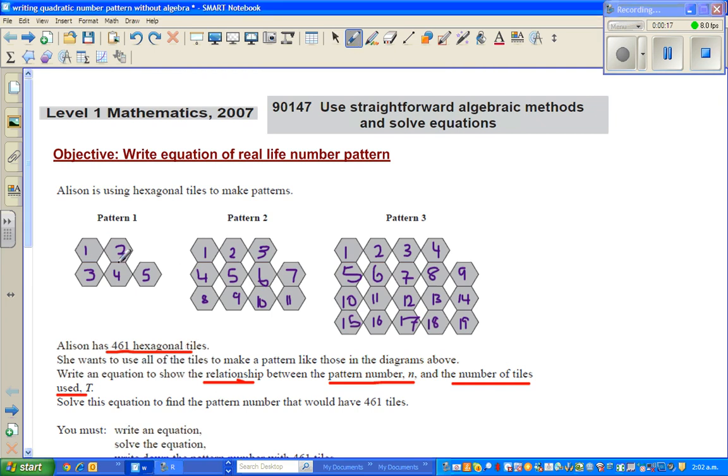So here the first pattern has got five tiles, the second has got 11, the third is 19, and so on.